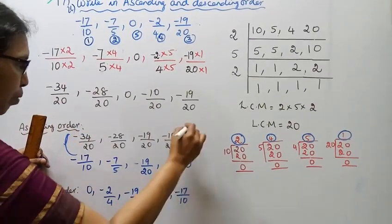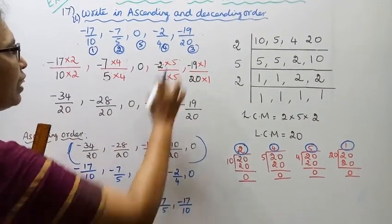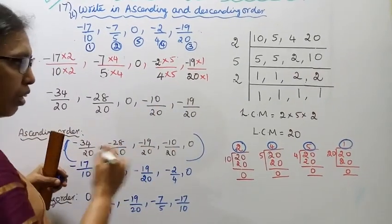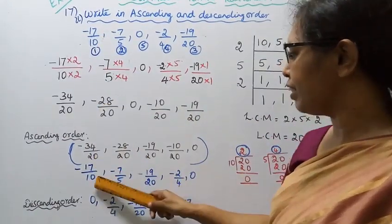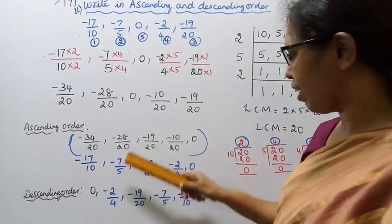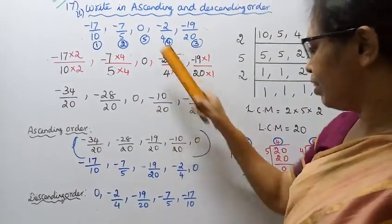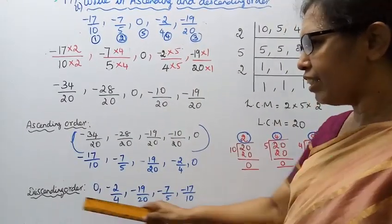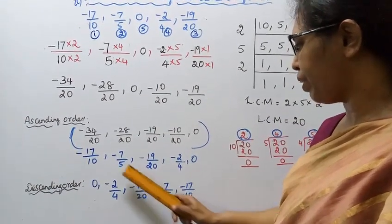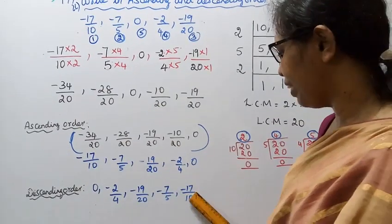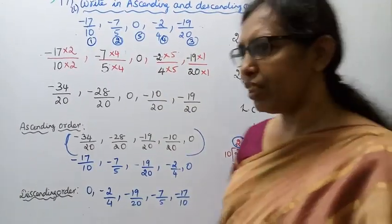For descending order, reverse the ascending order: 0, -2/4, -19/20, -7/5, -17/10. Descending order is the reverse. This is very easy in this case. Practice and see.